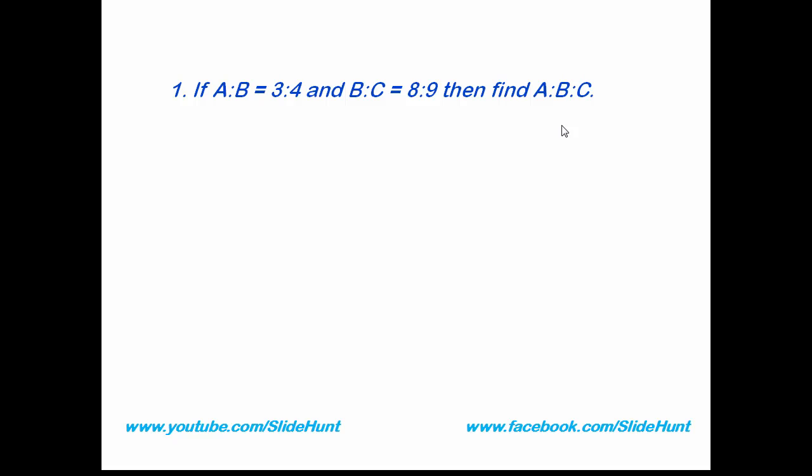Let's see how to solve it. First, write the given ratios: A is to B equals 3 is to 4, and B is to C equals 8 is to 9. Now you have to combine these two ratios into a single ratio and find A is to B is to C. To do that, first multiply these two numbers: 3 times 8 is 24.